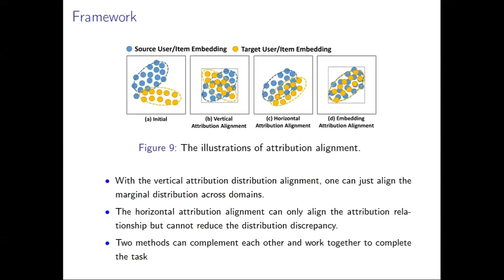Now we make a short summary. With the vertical attribution alignment, one can just align the marginal distribution across domains as shown in figure B. The horizontal attribution alignment can only align the attribution relationship, but cannot reduce the distribution discrepancy as shown in figure C. These two tasks can complement each other and work together to complete the task as shown in figure D to obtain the best performance.